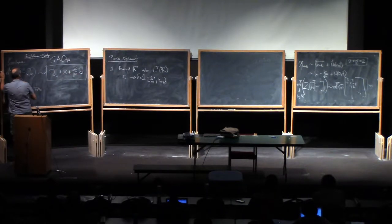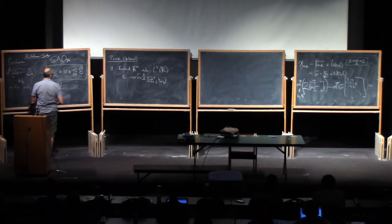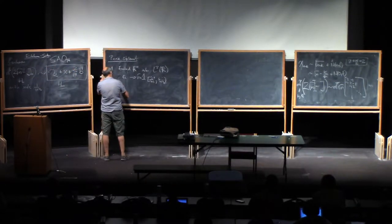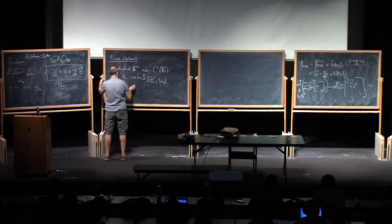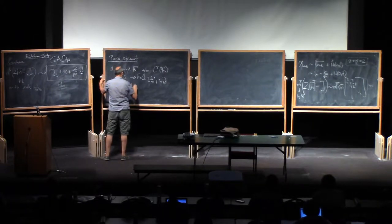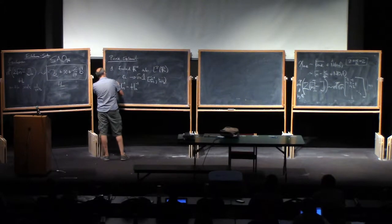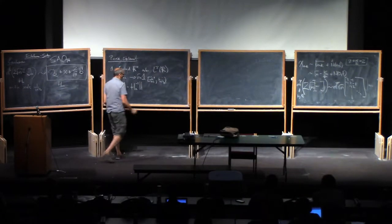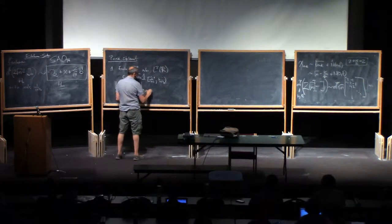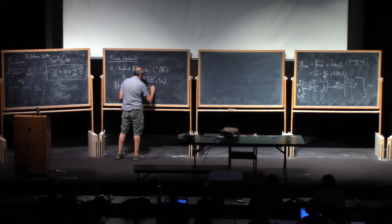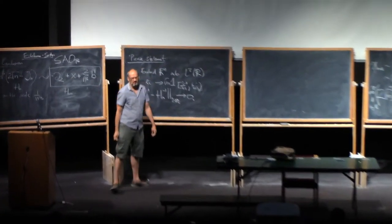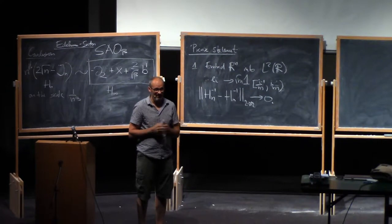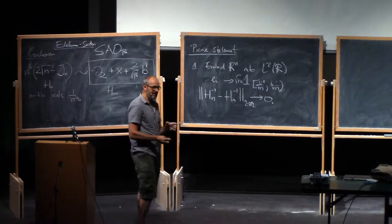So let's call this hn, I'm gonna call this h infinity. So hn inverse minus h infinity inverse in norm, and this can be operator norm, so say 2 to 2 norm is going to zero. And this notion is called norm-resolvent convergence for operators, and it implies a lot of things.